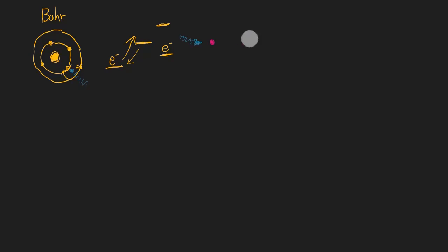Energy equals H times F. That's the energy of the photon. H is Planck's constant, and typically the MCAT will give you Planck's constant. For reference, Planck's constant is 6.6 times 10 to the minus 34. That's times frequency, which is usually written in Hertz. Energy of the photon is written in Joules, and the units for Planck's constant are typically given in Joules per Hertz.